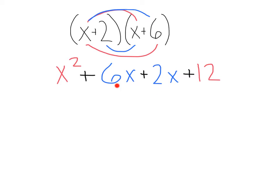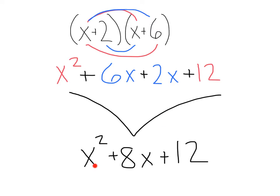Let's combine these like terms here, and that's going to give us x squared plus 8x plus 12. Now check this out, if we add 6x plus 2x to get 8, that's 2 plus 6 to give us 8, and multiply those same numbers, 2 times 6, we're going to get 12.